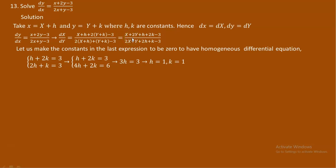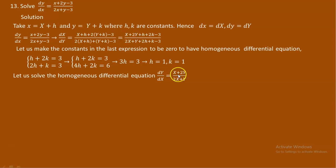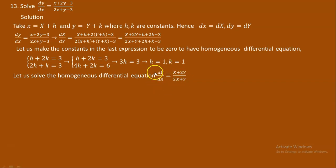Using capital letters X and Y, our equation is now corrected to dY over dX equals X plus 2Y over 2X plus Y. The constants become zero when h equals 1 and k equals 1. This is now your homogeneous differential equation. We can apply the technique for solving homogeneous differential equations, using capital letter X throughout.